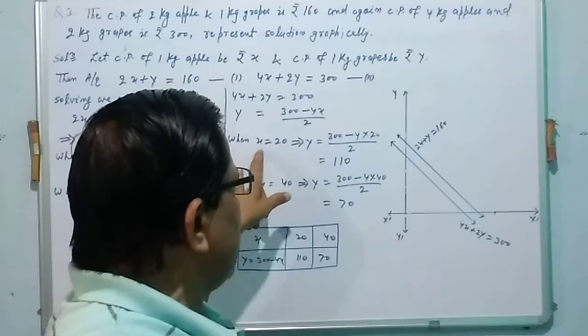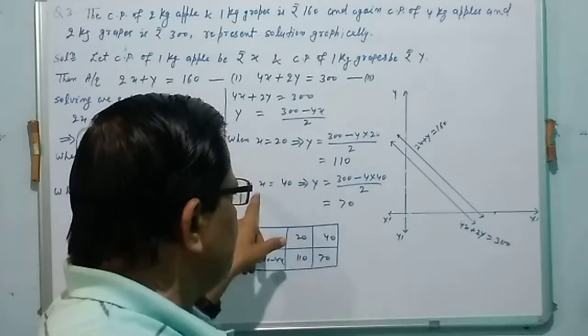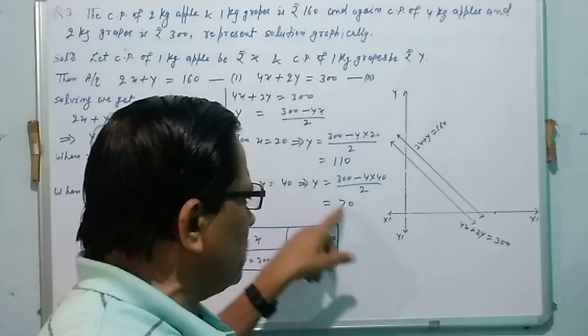When x equal to 40, we get y equal to 70. Again we make a table of this solution.